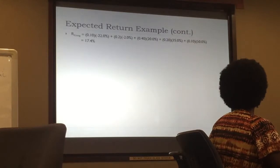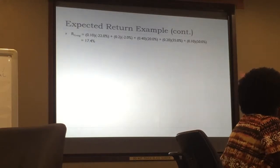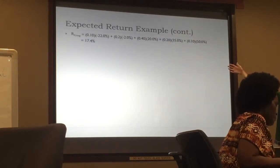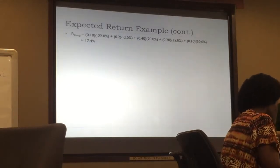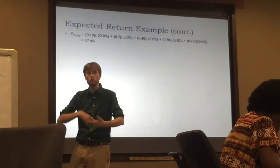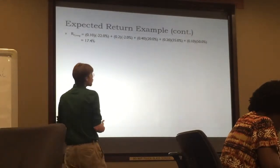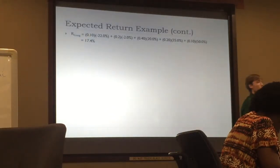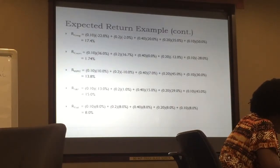Importantly, your expected return doesn't have to be any of your actual possible returns. No matter what happens, I'm not going to actually get 17.4% — the only things I can actually experience are negative 22%, negative 2%, 20%, 35%, and 50%. But if we think about this expectation as an average over many iterations, going year over year, on average Google would deliver 17.4%. We can do a similar calculation for any of the assets.